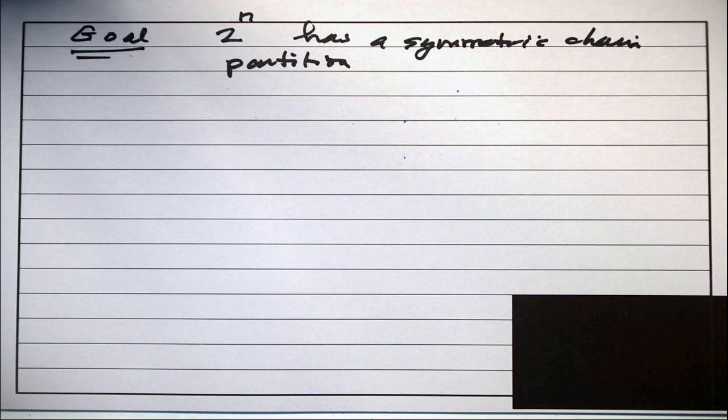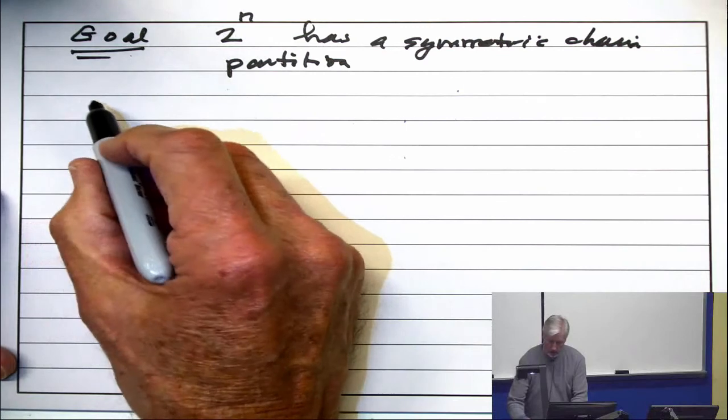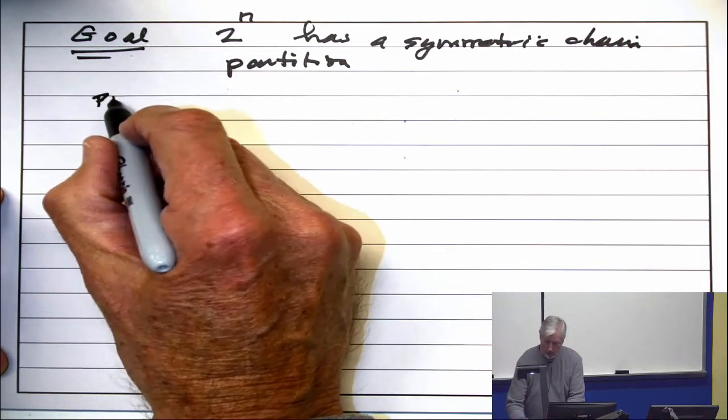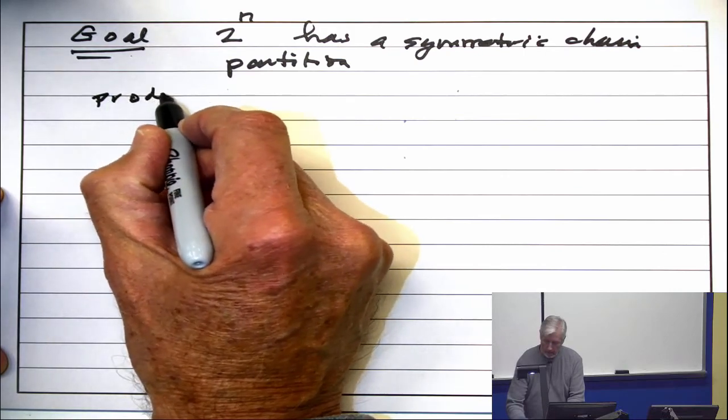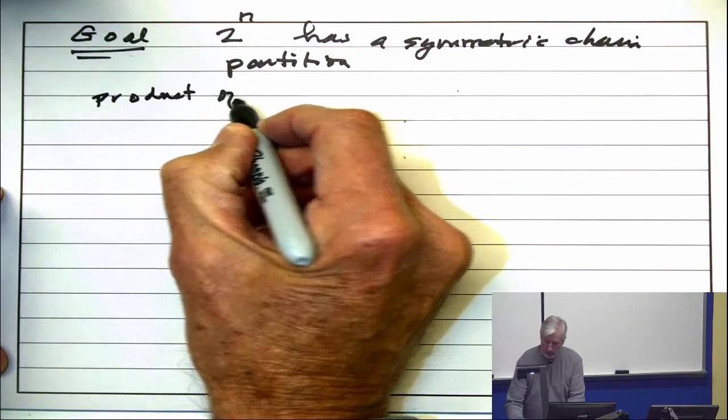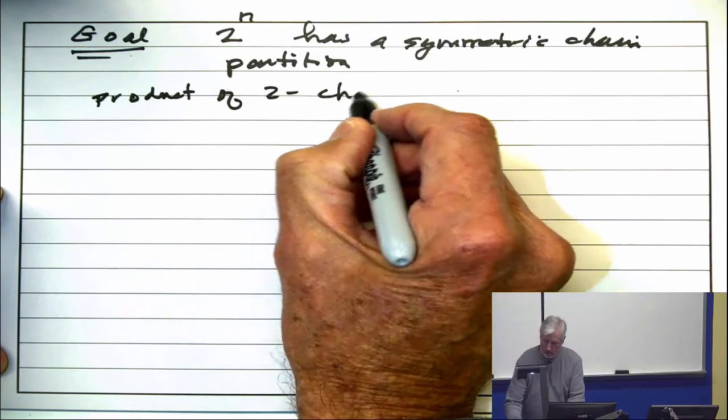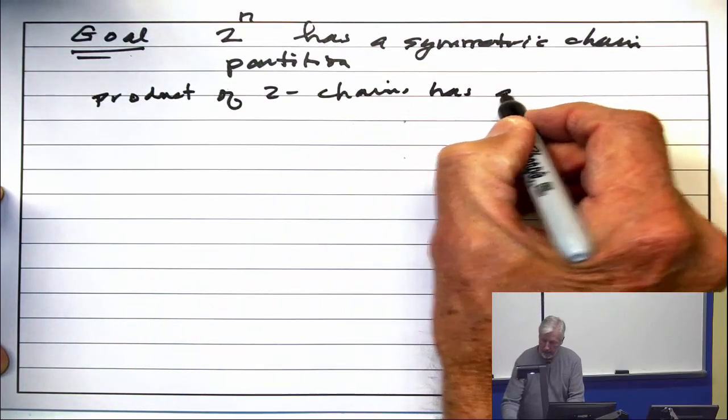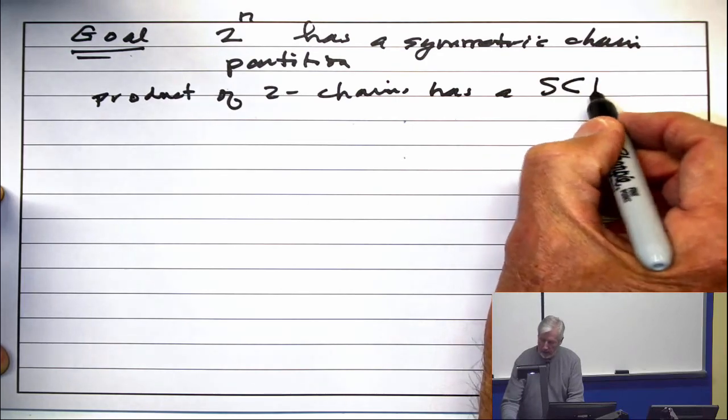Now, we're going to need a lemma, and the lemma is that the product of two chains has a symmetric chain partition.